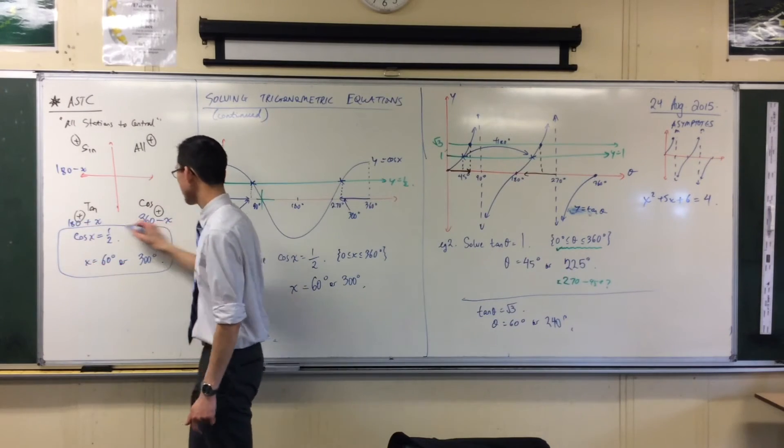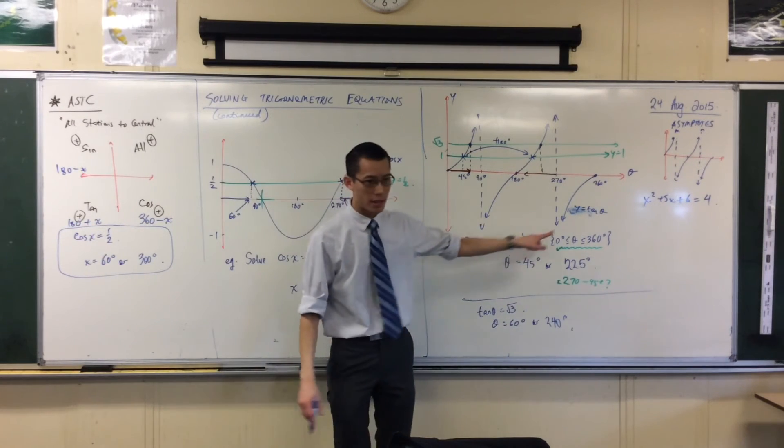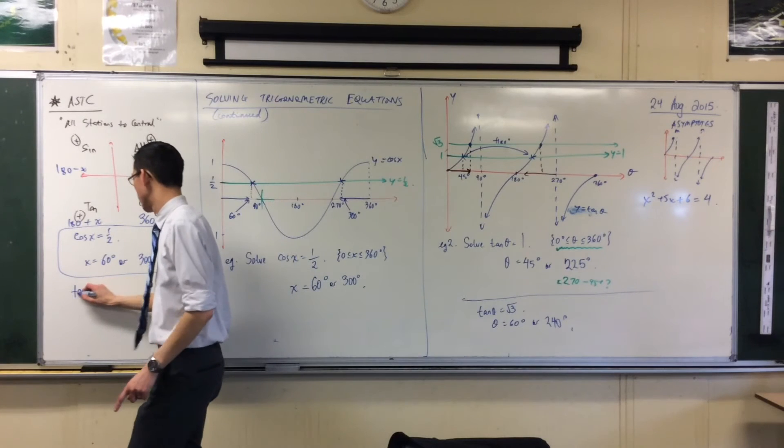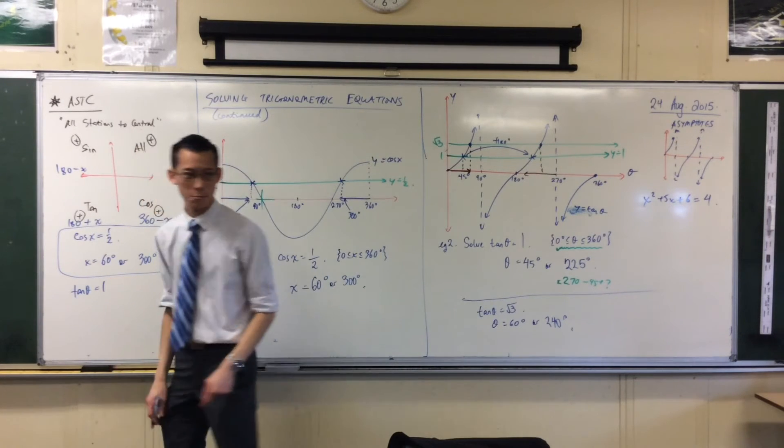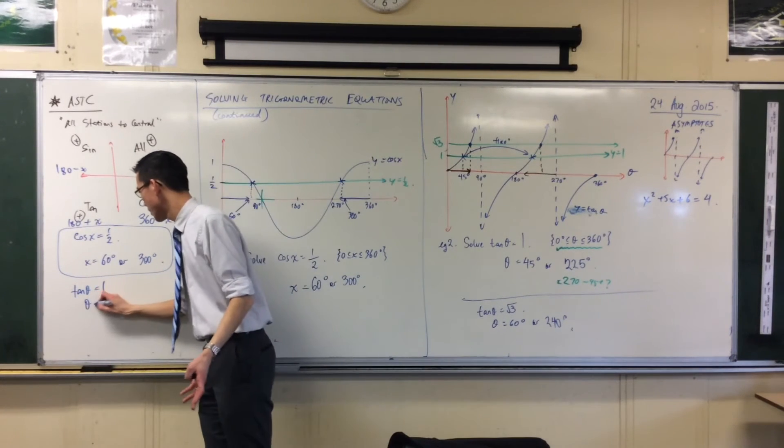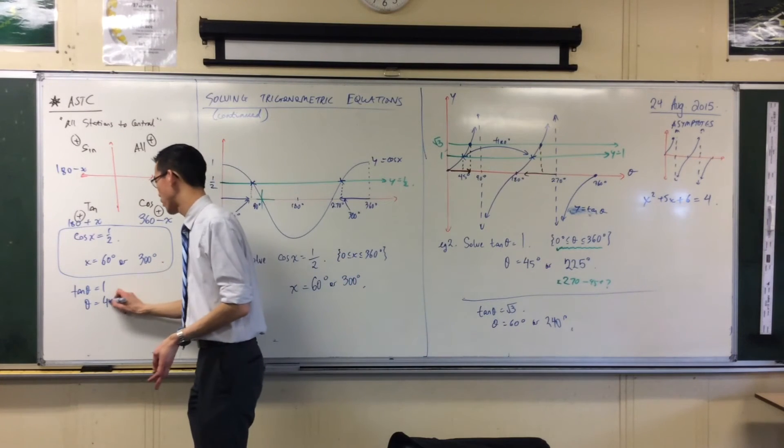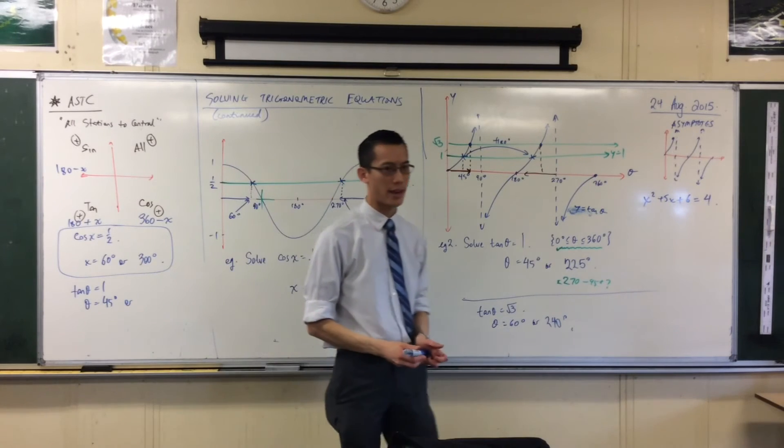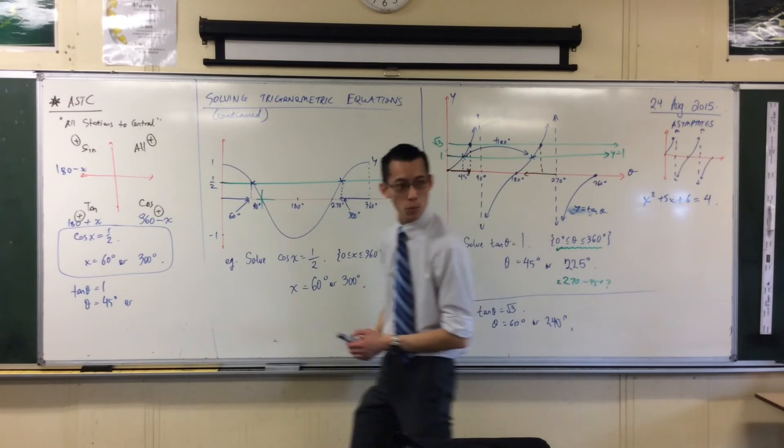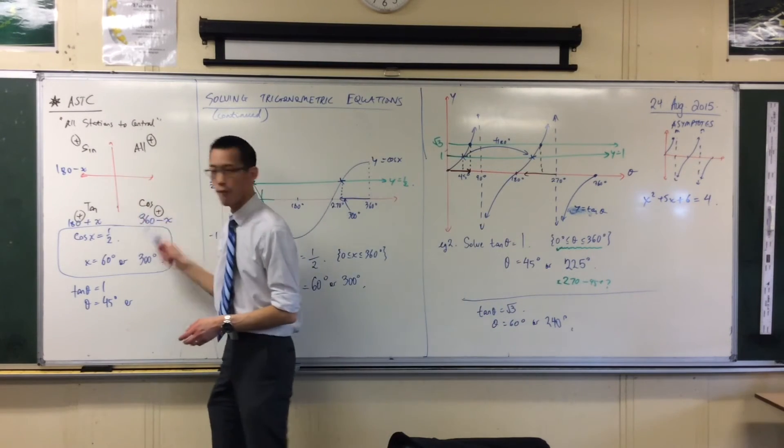How about this one over here? Tan theta equals 1. Reach for your calculator. It's positive, so your calculator hands you the first answer, which is 45 degrees. Then you're searching for your second answer. Look at your quadrants. First, second, third, fourth. In which other quadrant is tan positive?